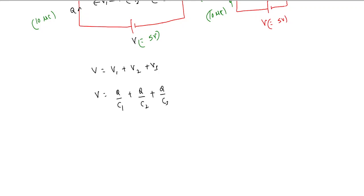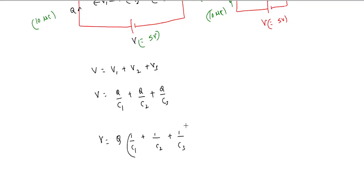If we pull out Q as a common factor, then V = Q × (1/C1 + 1/C2 + 1/C3). This expresses the total voltage drop in terms of C1, C2, and C3.